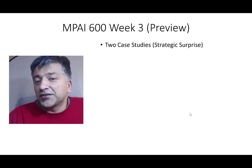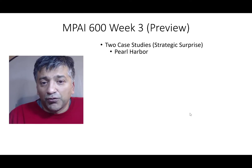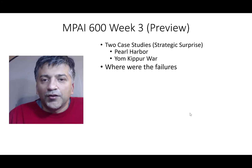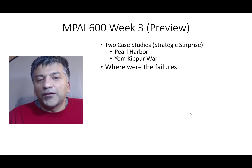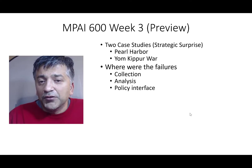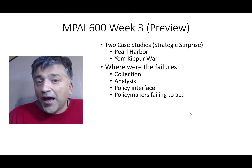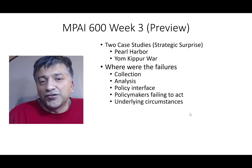So, week three preview: two case studies on strategic surprise — critical intelligence historical events. The first is Pearl Harbor; the second is the Yom Kippur War. Both were surprises to their respective intelligence communities. The question I want you to think about as you go through the readings and the lecture: where were the failures? Was it in collection? Was it in analysis? Was it at the interface between the intelligence community and military leadership? Were policymakers failing to act even though they had the correct intelligence, or were there just underlying bad circumstances?